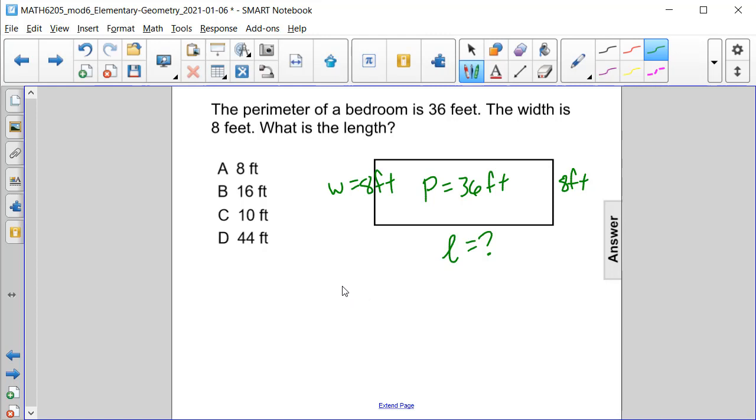And then we can add up our 8 feet and 8 feet and get 16 feet. That represents 2 widths of our perimeter.